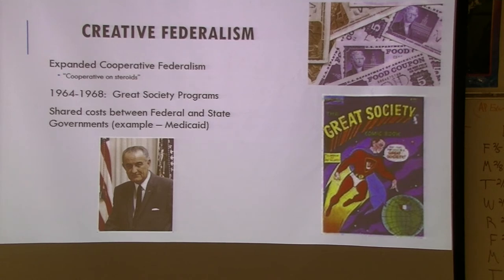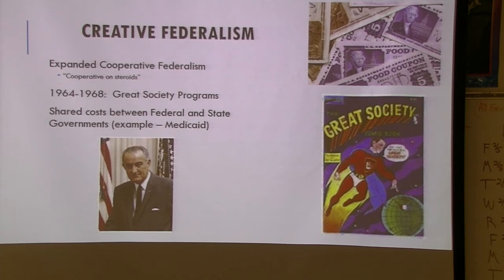The Great Society programs include the Department of Housing and Urban Development, Department of Transportation, Medicaid, various welfare programs — the War on Poverty. Right now we won't go into the good and bad of that — we'll look at that more in the policy unit — but this is where the federal government came a lot more into the states' business.